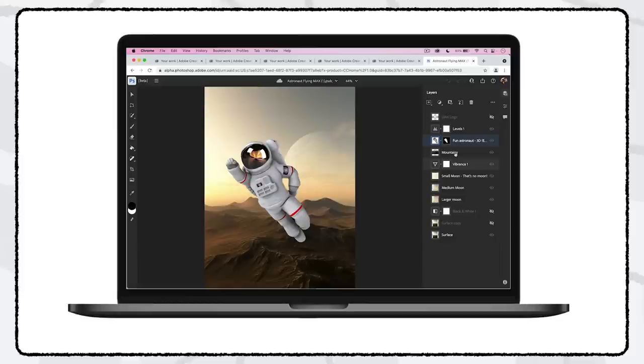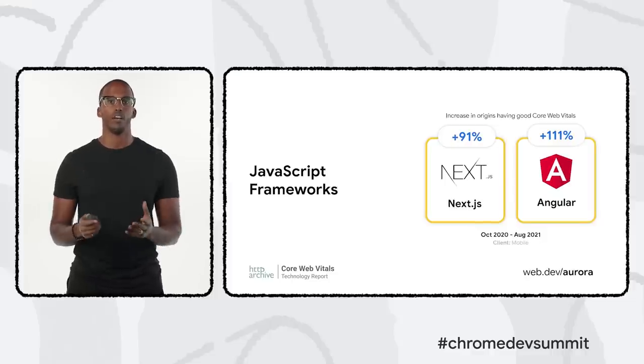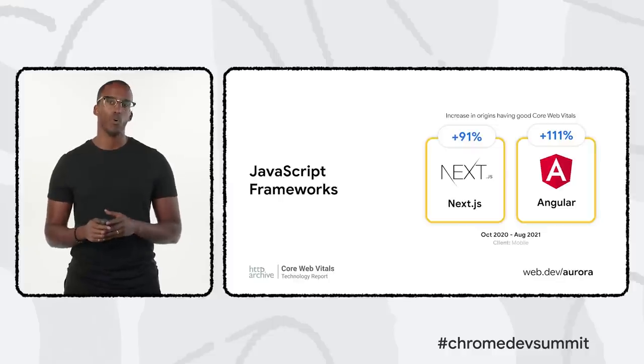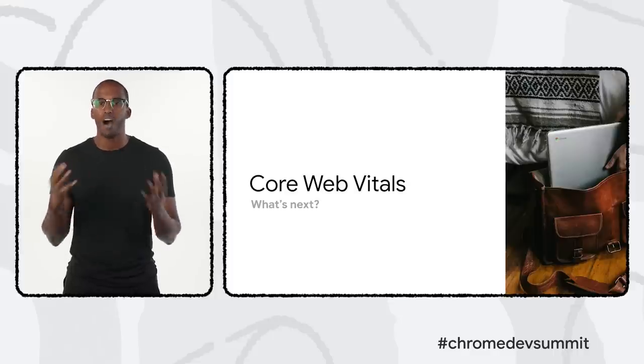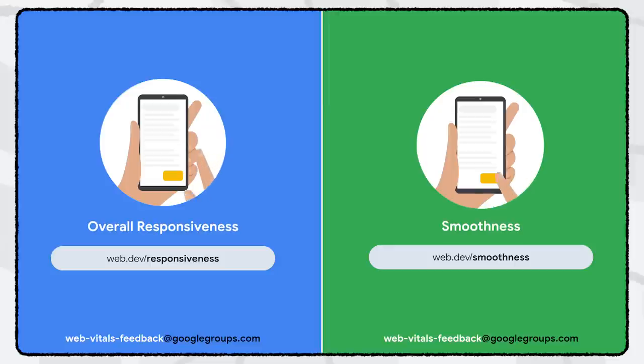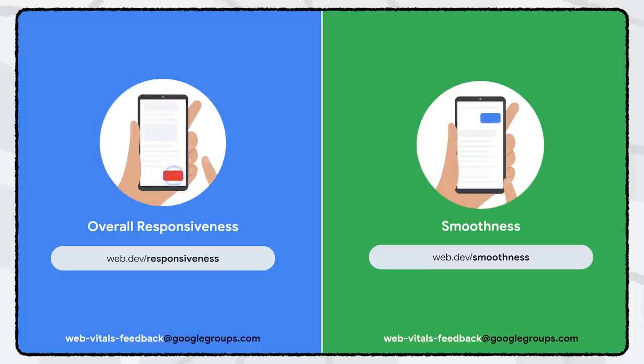To help every developer deliver great user experiences, Chrome continues to evolve the Web Vitals program. Chrome has also worked with popular JavaScript frameworks including Next.js and Angular to deliver the best user experiences without sacrificing developer experience — an initiative called Aurora. Thanks to strong defaults and optimized performance, two new metrics are being introduced that aim to improve how user experience is measured on the web. These are still being worked on, and developer feedback is welcomed.